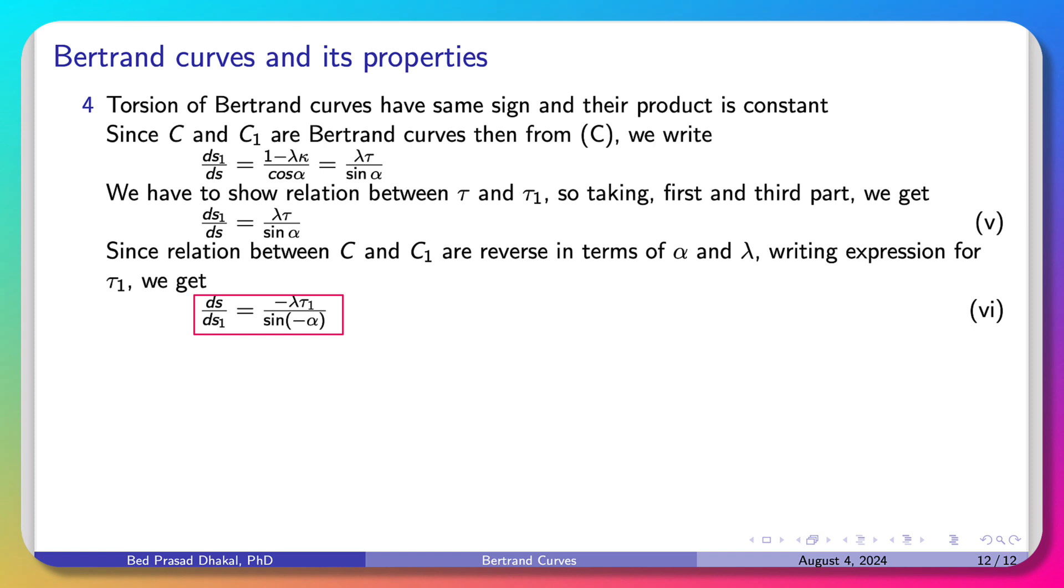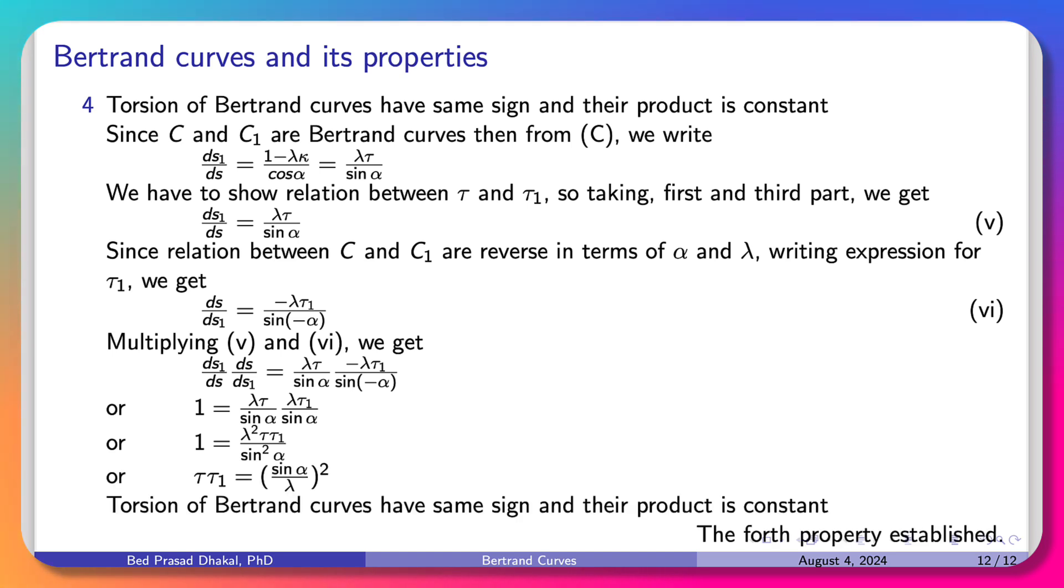Lambda becomes minus lambda, and α becomes minus α, so we get this expression. Now we multiply these two equations: ds1 by ds times ds by ds1 equals 1. Simplifying, 1 equals λτ times sin α by λτ1 times sin α. So we write τ into τ1 equals sin α by λ whole square. Now this whole square is always positive.